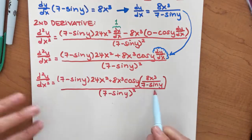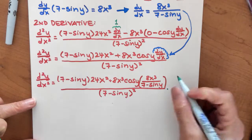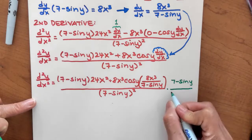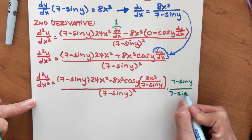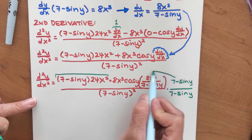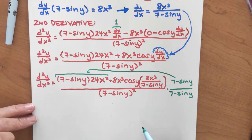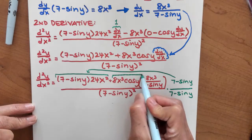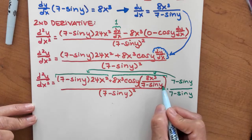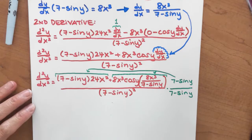I don't want to leave this complex fraction in here. So to get rid of the complex fraction, I'm going to multiply by its reciprocal in the form of the number 1: 7 minus sine y over 7 minus sine y. When I multiply that times my first term, I'm going to get a 7 minus sine y squared. And when I multiply it times the second term, of course it's going to cancel with that fraction, and I will not have a complex fraction anymore.